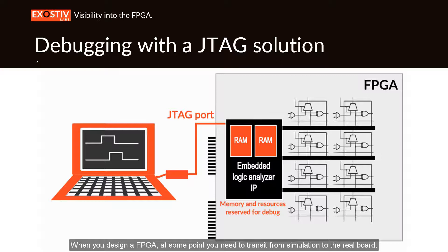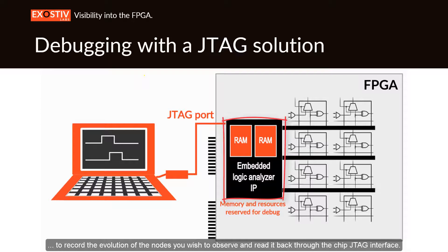When you design an FPGA, at some point you need to transition from simulation to the real board. Running tests at this stage generally consists in reserving some logic and memory in the FPGA to record the evolution of the nodes you wish to observe, and reading it back through the chip's JTAG interface.